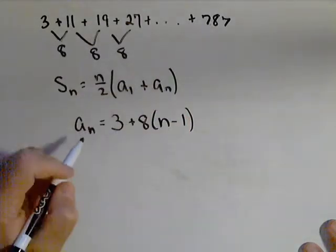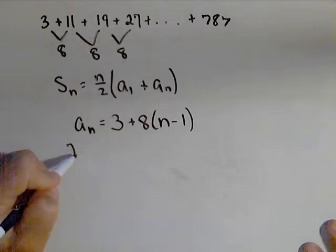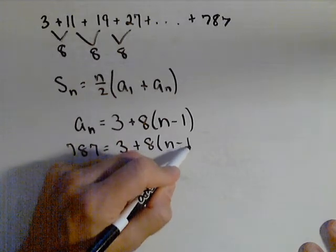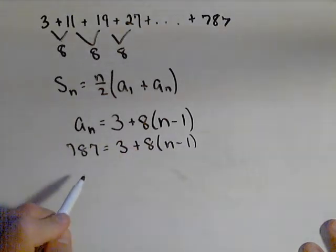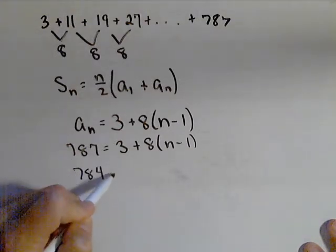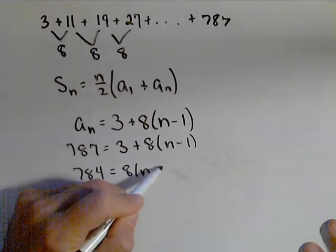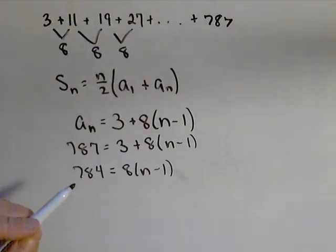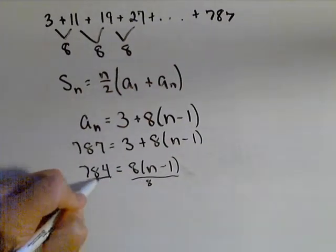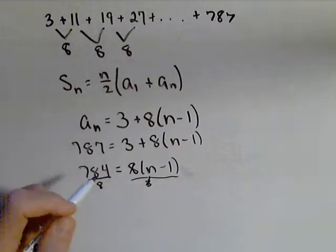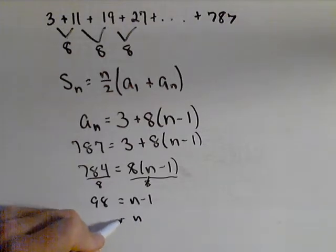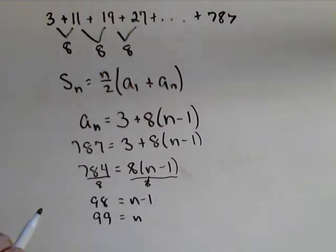And we want to know what the term for 787 is. It says 787 equals three plus eight times n minus one. Our goal is to solve for n, so we know how many terms we have. So we subtract three from both sides. We have 784 equals eight times n minus one. And then we're gonna divide both sides by eight. And we get 98 equals n minus one. Add one to both sides. We find out that this series has 99 terms.